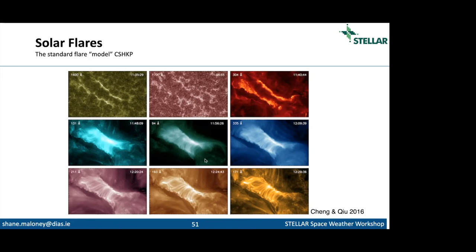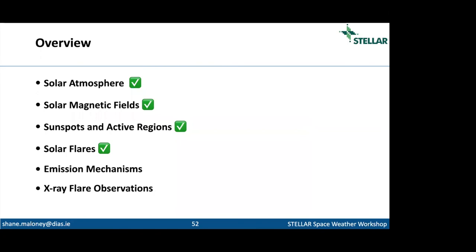At the very top we see enhanced emission, fitting our picture of acceleration at the loop top and then thermal evaporation — often called evaporation — where hot material expands into the loops, filling them with hot plasma that emits in thermal regimes. The key point is the standard flare model isn't a numerical model, but it helps describe what we see in terms of the fundamental process of reconnection. It does explain the timing and the general morphology of a lot of flare emissions we observe.